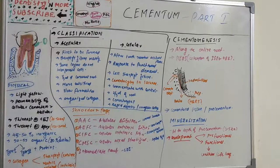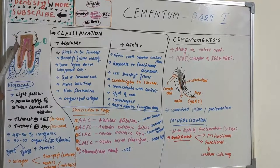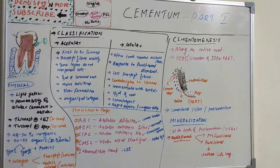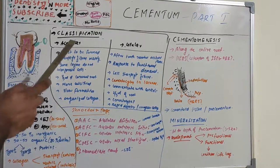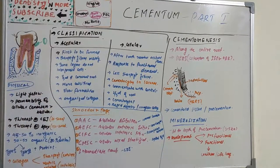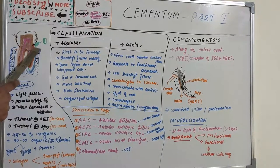Cementum is a calcified avascular mesenchymal tissue that forms the outer covering of the anatomic root — not the clinical root, but the anatomic root. This definition was given in Carranza. We have basically two main types: acellular and cellular. It begins at the cervical portion of the tooth at the cemento-enamel junction.